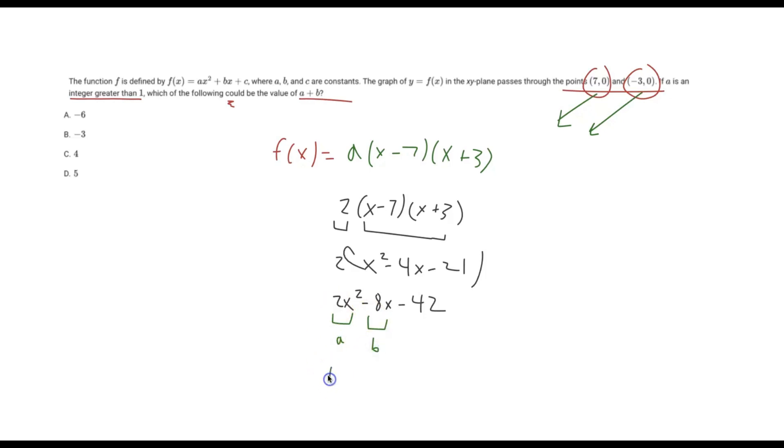So our a value is positive 2, and our b value is negative 8. And if we add those together, positive 2 plus negative 8 is just 2 minus 8. That's going to give us the answer choice of A, and therefore A is going to be our answer.